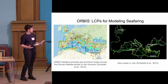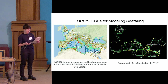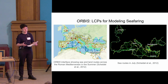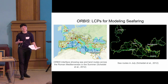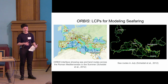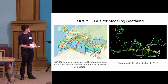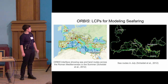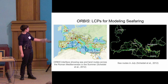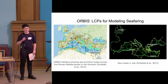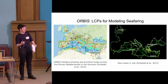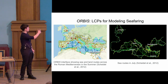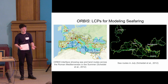Least cost paths emphasize source and destination points rather than the actual process of mobility. In maritime archaeology we talk a lot about the process of seafaring — the experience of mariners at sea — and these cost paths erase a lot of that conversation. In the model, the sea becomes literally black; you get the impression the ship just goes from one point to another, but what happens in between?